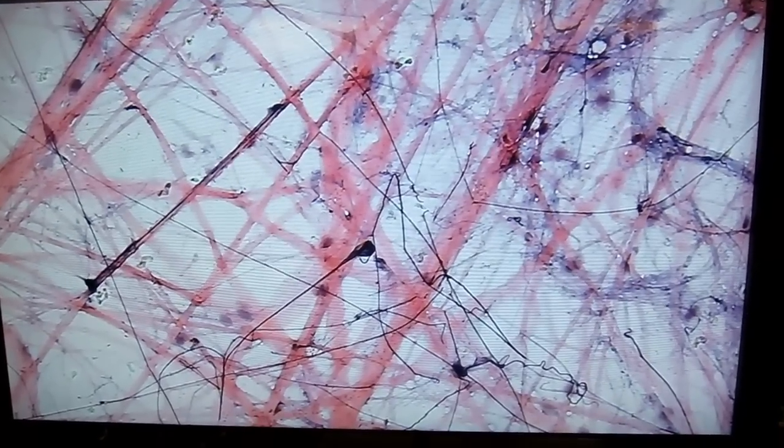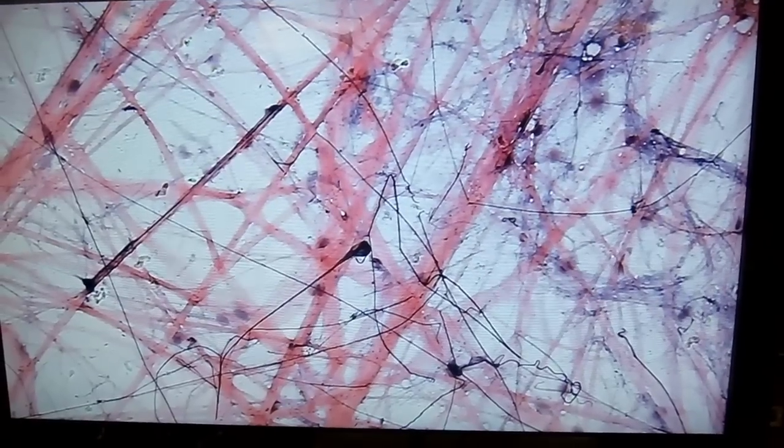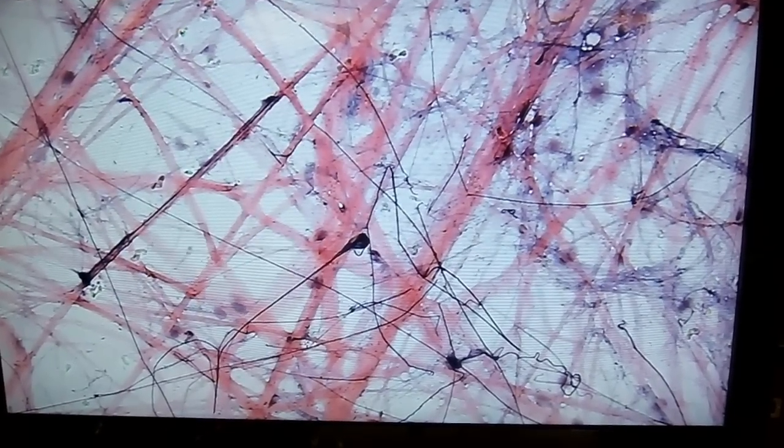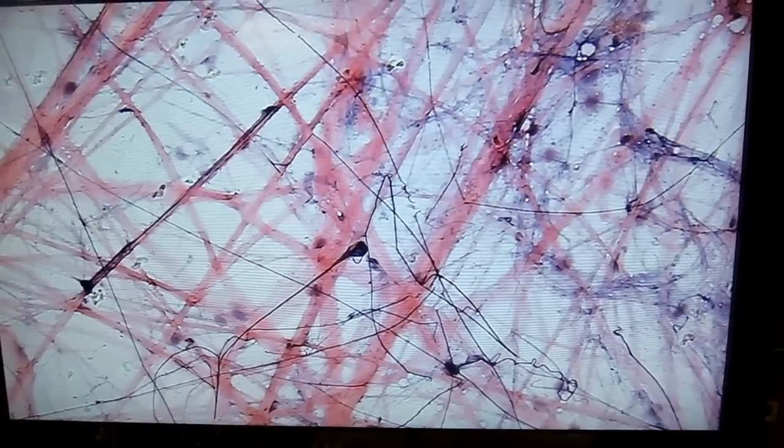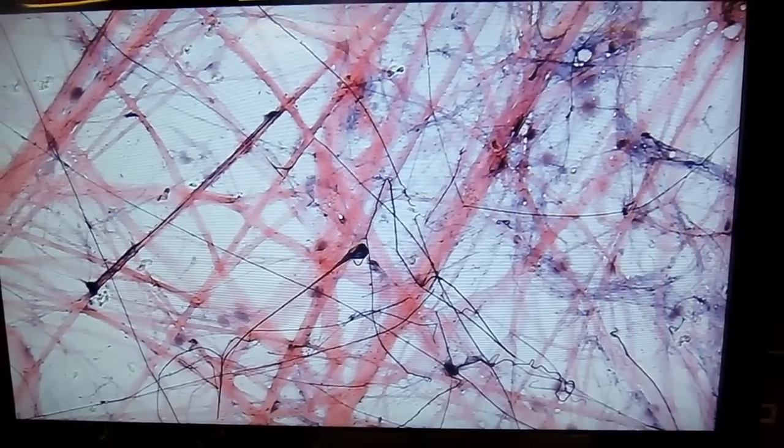So the hallmarks for areolar connective tissue are the obvious collagen and elastic fibers in this random orientation and organization with small numbers of nuclei representing cells scattered around in the tissue. So again, this is areolar connective tissue.